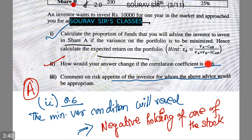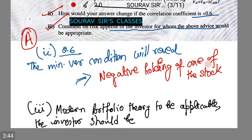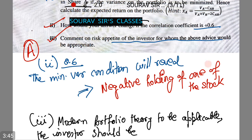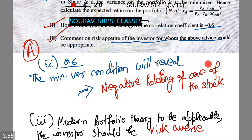We also need to comment on the risk appetite of the investor for whom the above advice would be appropriate. Under modern portfolio theory, the investor should be risk averse and non-satiated.